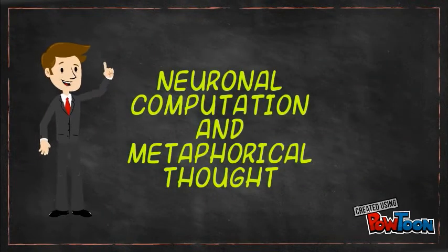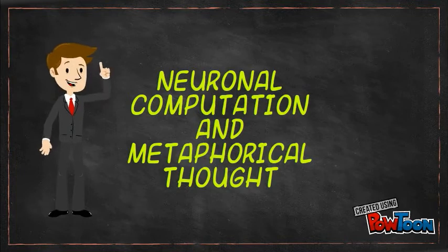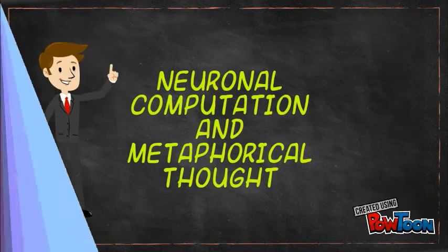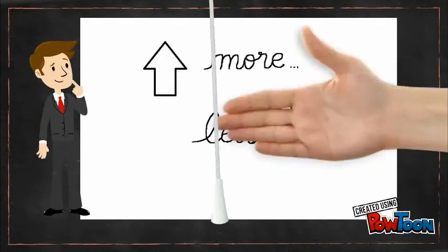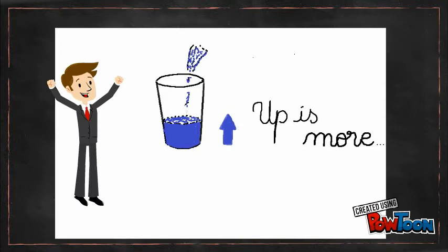I have a good idea of what that neural computation has to be like. For example, more is up and less is down. Pour more water in a glass, the level goes up every time.